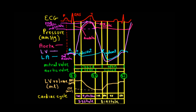The X descent is the drop in pressure after the C wave. Then pressure rises slowly as the atria fill, hitting a peak at the V wave where the AV valves open. After the V wave, there's a drop in atrial pressure called the Y descent, as the atria deliver blood to the ventricles in an early rapid filling phase. Those are the important atrial pressures.